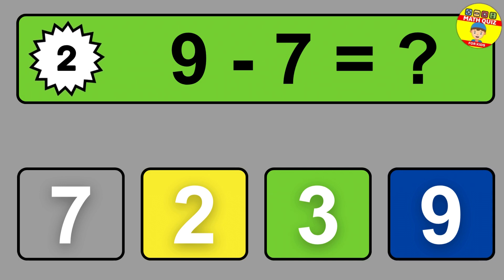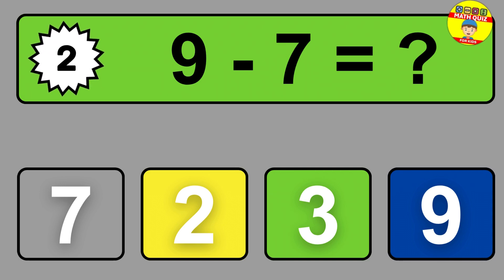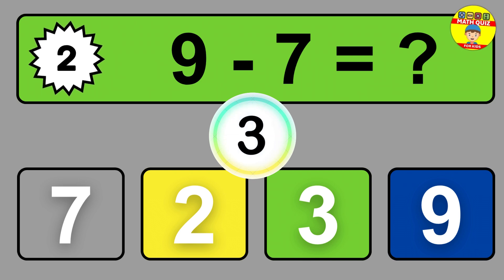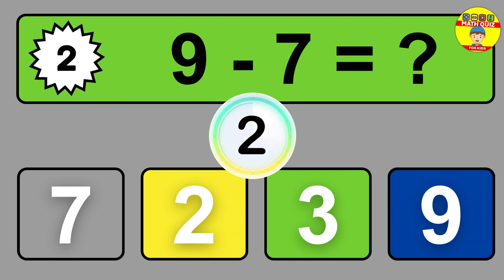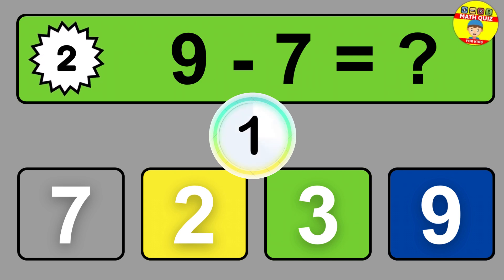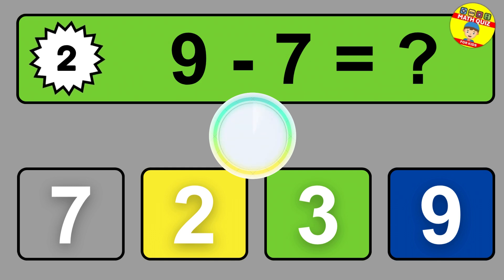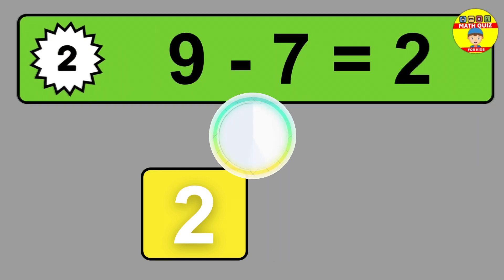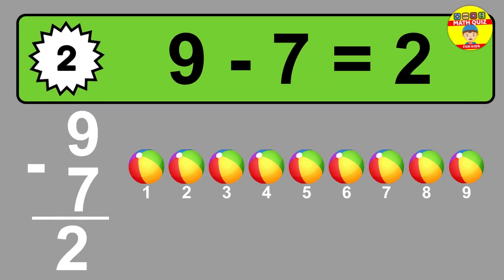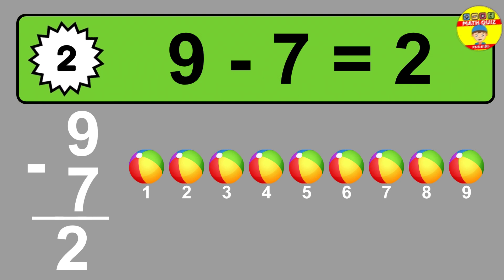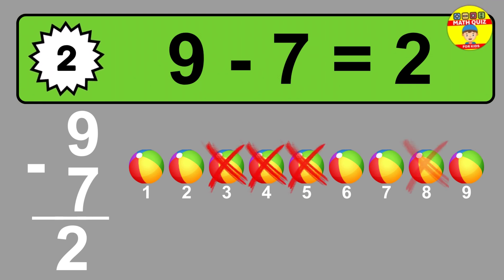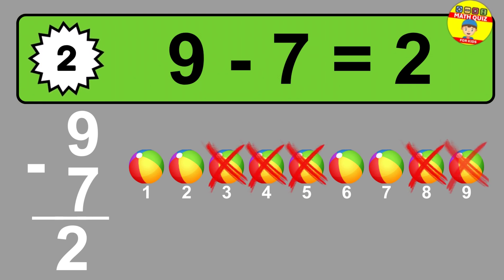Question 2. 9 minus 7 equals what? So the answer is 9 minus 7 is 2. Let's count it: 1, 2.